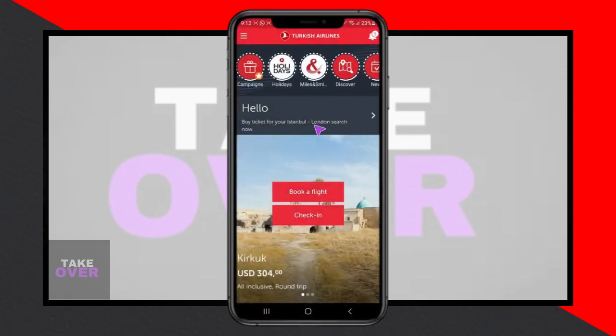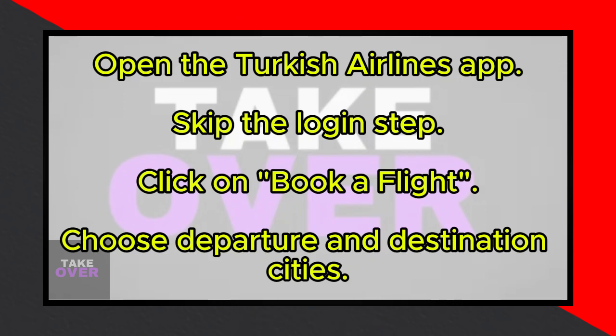First, I'll bypass the login step for now. Next, I'll select a random flight by clicking on Book a Flight. From there, I'll choose the departure and destination cities, such as Istanbul to London.